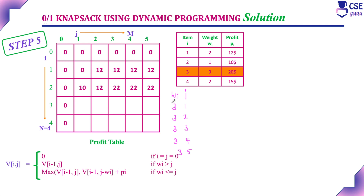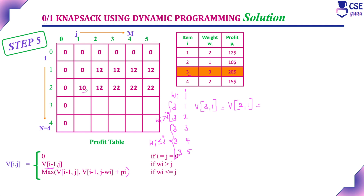When W_i is greater than J, we implement the recurrence relation V(i-1, j). When W_i is less than or equal to J, we implement max of V(i-1, j) and V(i-1, j-W_i) + P_i. For V(3,1): W_i=3 > J=1, so V(3,1) = V(2,1) = 10. For V(3,2): W_i=3 > J=2, so V(3,2) = V(2,2) = 12.